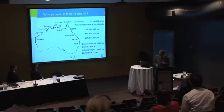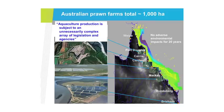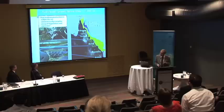The industry's own target is to grow to about 5,000 hectares, about 25,000 tonnes, roughly a $375 million industry. So there is potential to expand — but will it do so? I think the words of the Productivity Commission, and these aren't my words, are that aquaculture production is subject to an unnecessarily complex array of legislation and agencies.